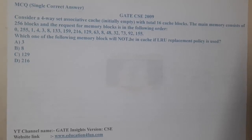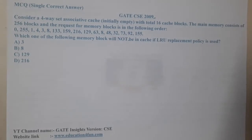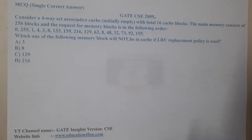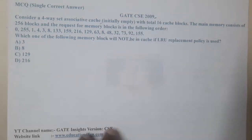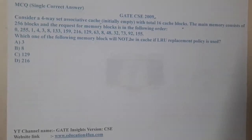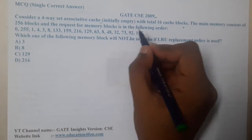Hello guys, we are back with our next lecture. In this lecture let us go through the next question. This question belongs to GATE CSE 2009. The question is: consider a 4-way set associative cache, initially empty, with total 16 cache blocks. The main memory contains 256 blocks and requests for memory blocks in a particular order.